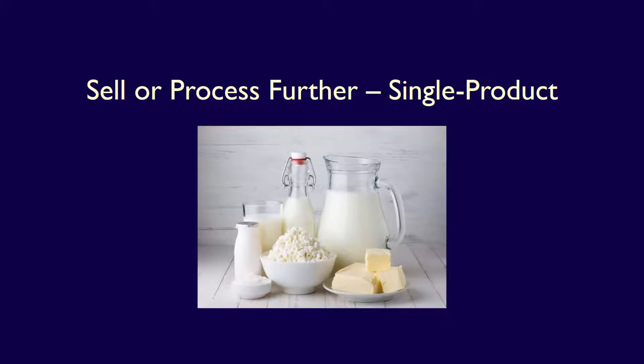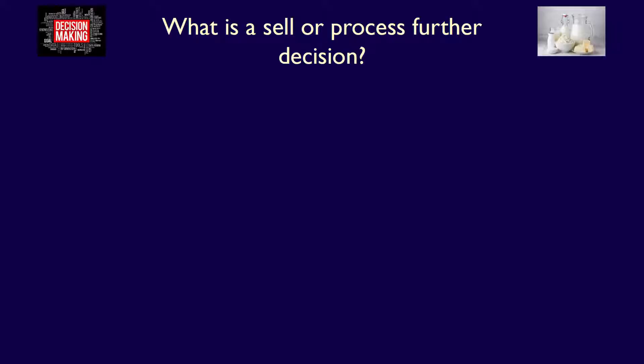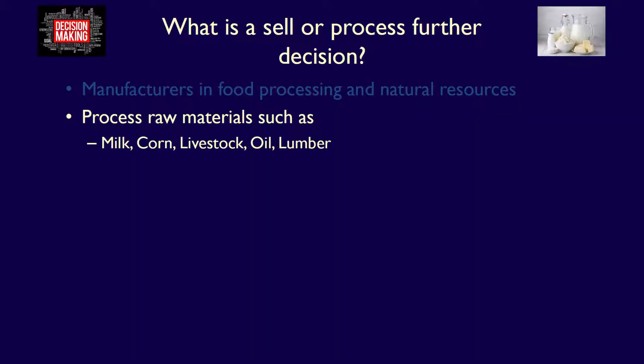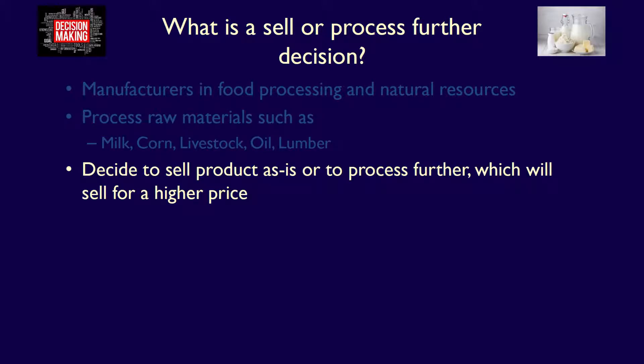In this video we're going to address the decision of whether to sell or process further. Some manufacturers, particularly those involved in food processing and natural resources, have to make a sell or process further decision. Often these manufacturers process raw materials — things like milk, corn oil, livestock, or lumber — and have to decide whether to process the raw material to a particular point or to continue processing further, perhaps even to the point of producing a finished good.